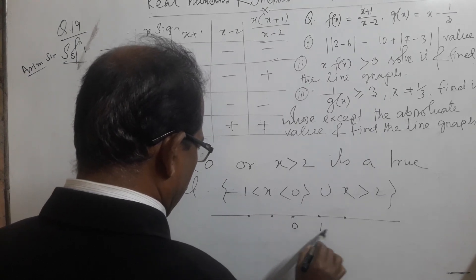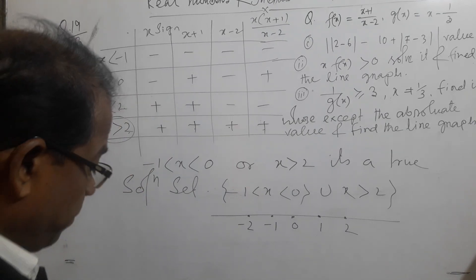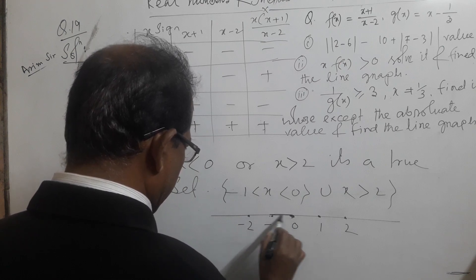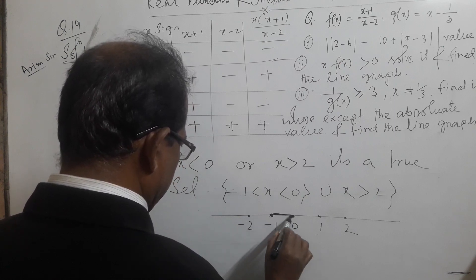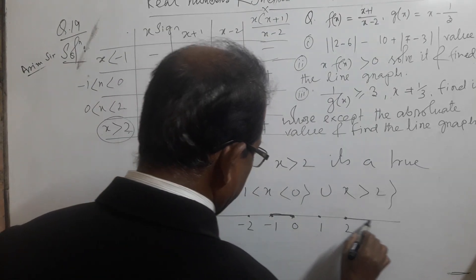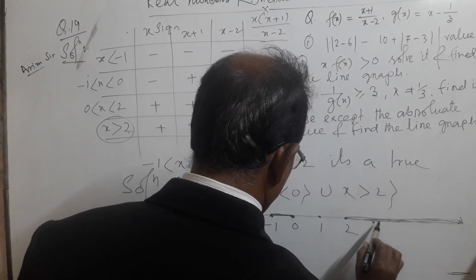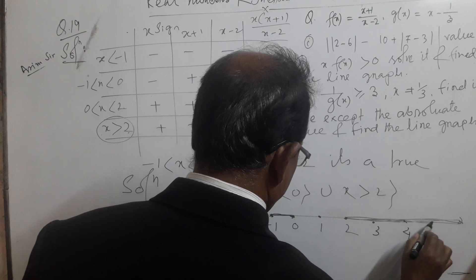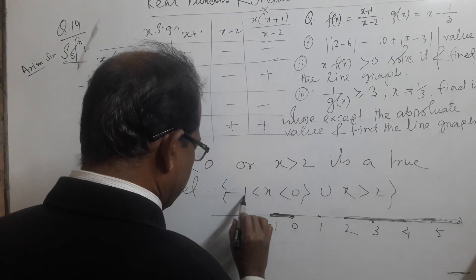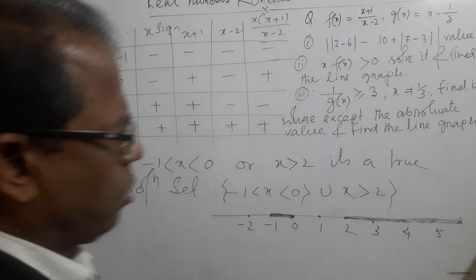On the number line: minus 1 and 2 are the critical points. The interval from minus 1 to 0, and the ray from 2 to the right, represent the solution. Lines are drawn on the graph from minus 1 to 0 and from 2 extending to 3, 4, and 5. This completes the line graph. Thank you so much.